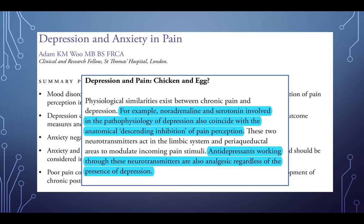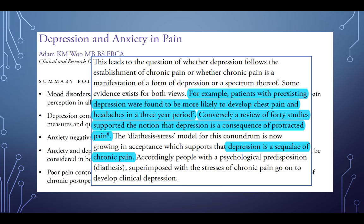Physiological similarities exist between chronic pain and depression. Noradrenaline and serotonin, involved in the pathophysiology of depression, also coincide with the anatomical descending inhibition of pain perception. These two neurotransmitters act in the limbic system and the PAG — the periaqueductal gray — to modulate incoming pain stimuli. Antidepressants working through these neurotransmitters are also analgesics, regardless of the presence of depression.